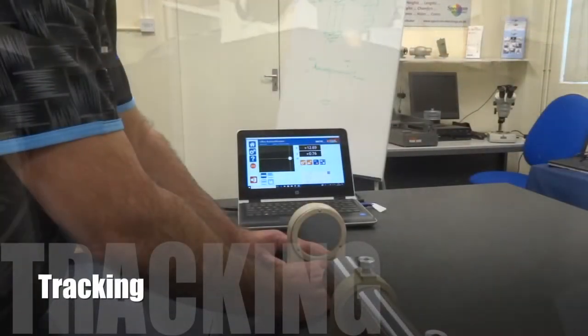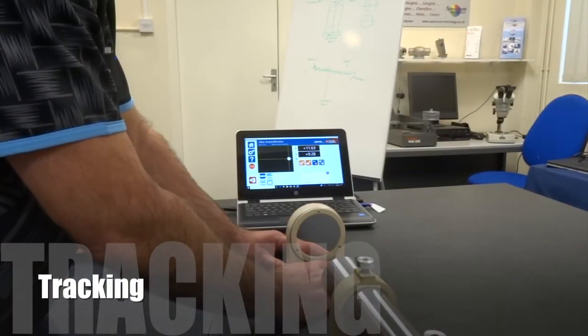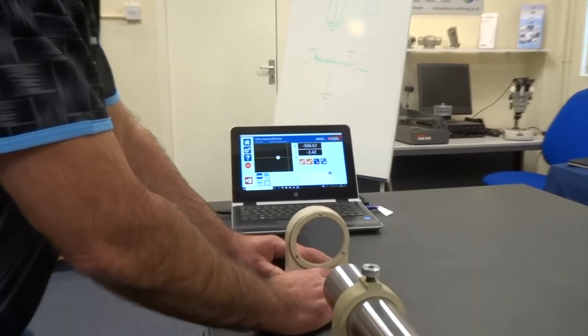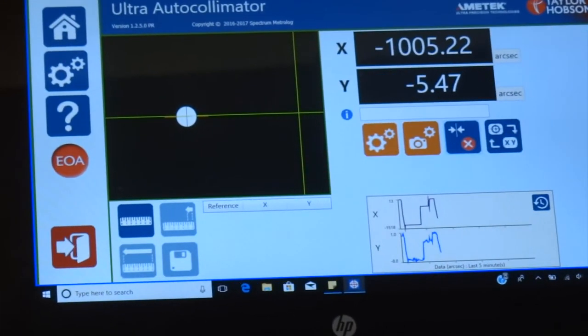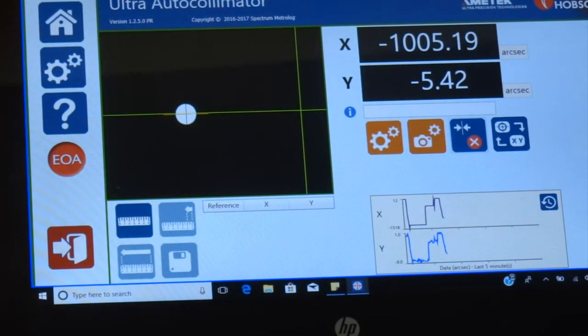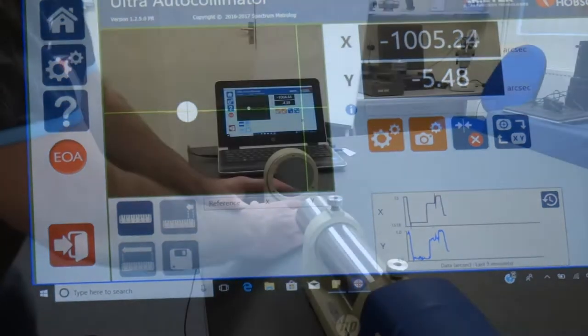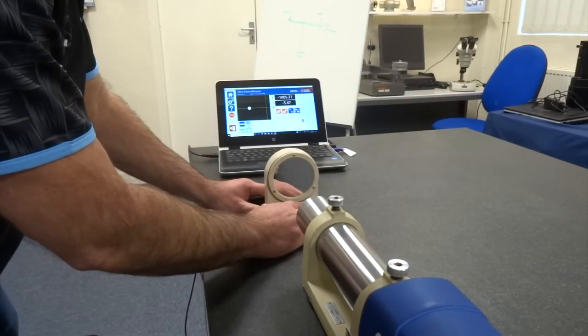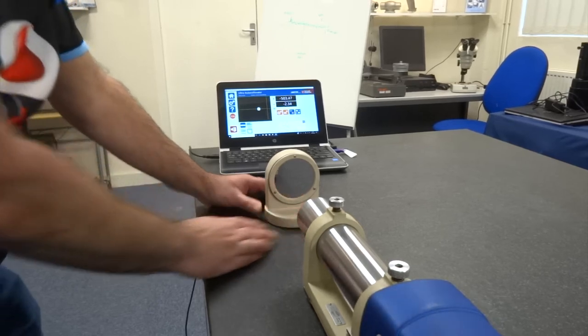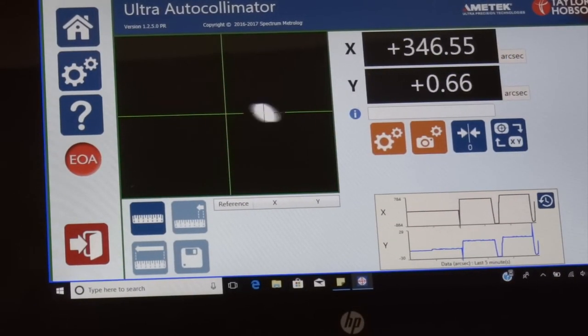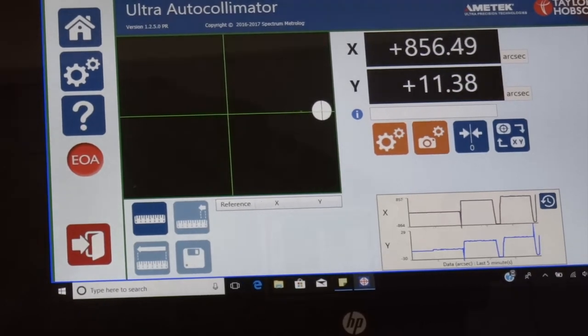Now we need to set the orientation and tracking. What we want to see is when the mirror tilts backwards and forwards, in other words going up and down, that the autocollimator is set so it also measures just up and down. How I normally do this is if I move the mirror, if I twist the mirror left to right, we should only have one axis on the autocollimator moving. The second axis should remain stationary.